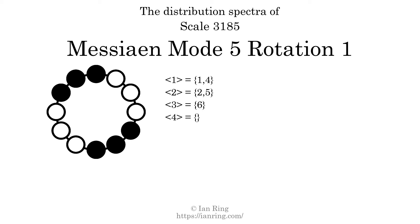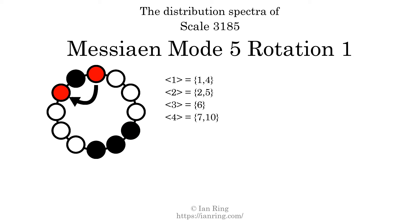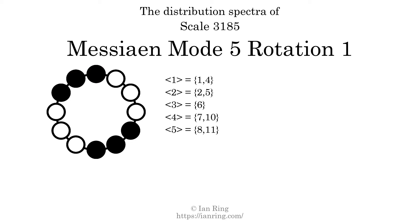The generic interval of 4 scale steps comes in 2 different specific interval sizes: 7 semitones and 10 semitones. The spectrum width of this generic interval is 3. The generic interval of 5 scale steps comes in 2 different specific interval sizes: 8 semitones and 11 semitones. The spectrum width of this generic interval is 3. The spectrum variation is the sum of all the widths divided by the number of tones. The spectrum variation of this scale is 2.